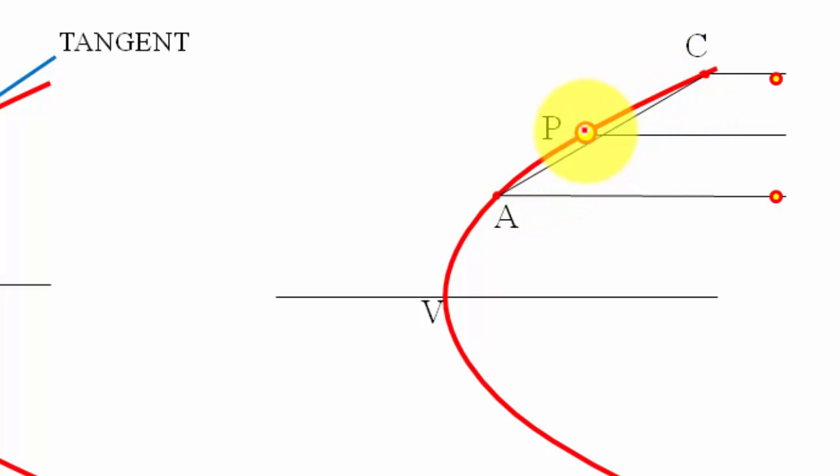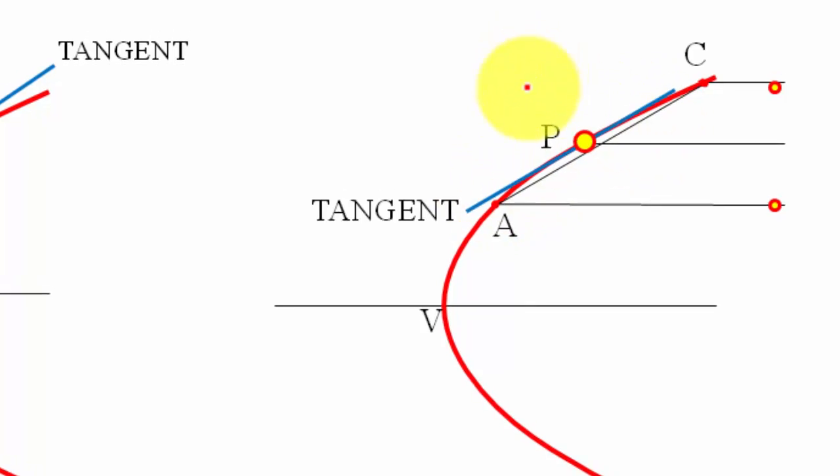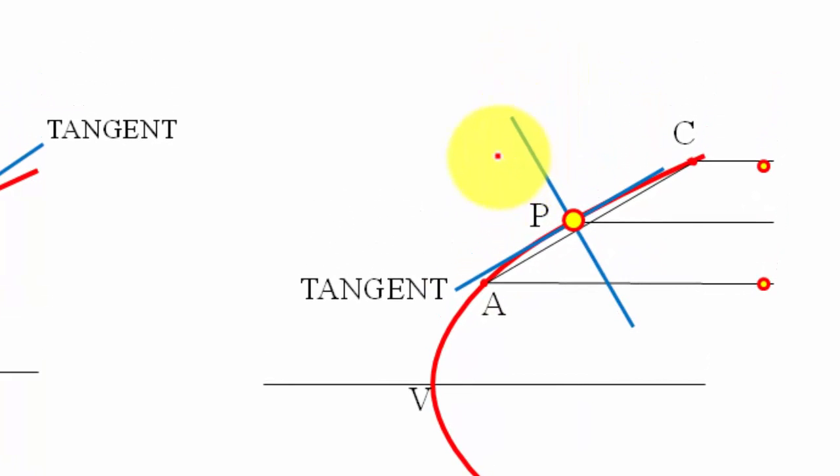Move it to this point P and then simply draw a line which automatically qualifies to be called as a tangent. And perpendicular to a tangent, we know very well the name of that line, that is a normal. That's it.